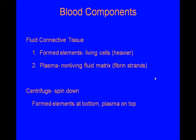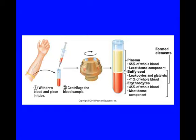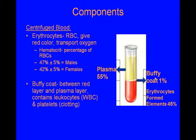Looking at centrifuged blood more closely, the plasma portion is 55% of your blood. It's lighter, so it shows up at the top as that yellow. All the red at the bottom is the formed elements, along with the buffy coat. The red is just erythrocytes, which make up 45% of blood. The buffy coat makes up 1% and includes the leukocytes, which are the white blood cells, and the platelets, which are used for clotting.